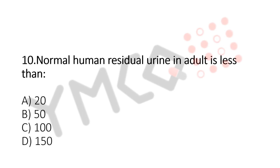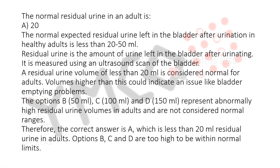The answer is A. 20. The explanation for this question is: the normal residual urine in an adult is A. 20.